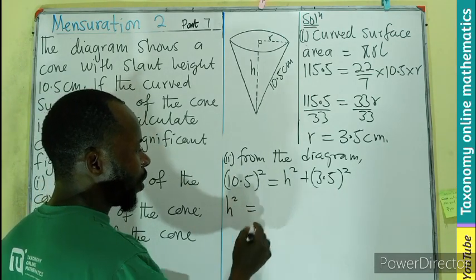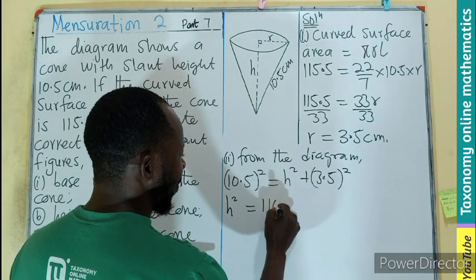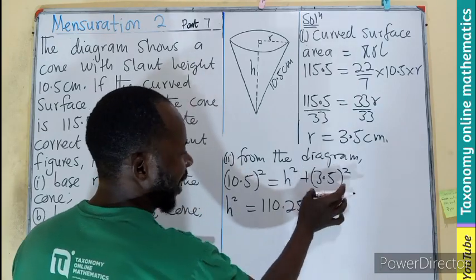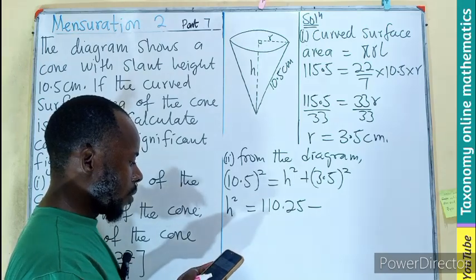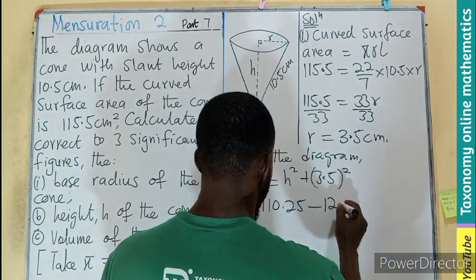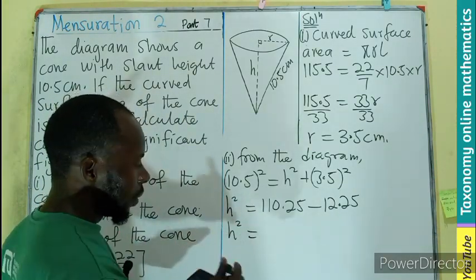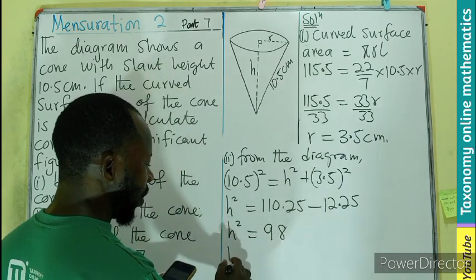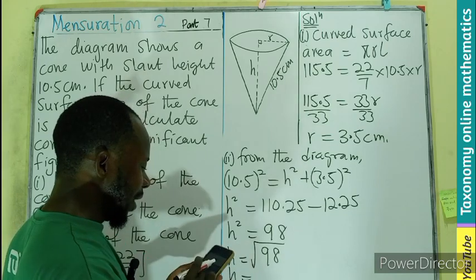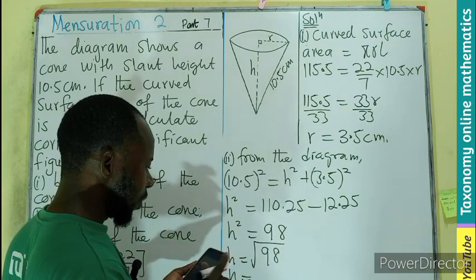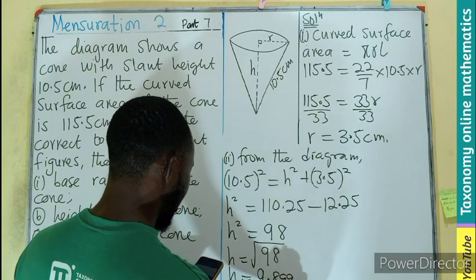Using the Pythagorean theorem, the longer side will be 10.5 squared equals h squared plus 3.5 squared. And you believe that this will be taken from here. So our h squared will be equal to 10.5 squared, that will give us 110.25 minus 3.5 multiplied by itself to give us 12.25. Meaning your h squared will be equal to 98, so h will be equal to the root of 98. So the height is going to be 9.899.